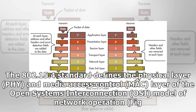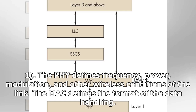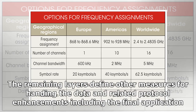All of these special versions use the same base radio technology and protocol as defined in 802.15.4a/b. The 802.15.4 standard defines the physical layer (PHY) and media access control (MAC) layer of the Open Systems Interconnection (OSI) model of network operation. The PHY defines frequency, power, modulation, and other wireless conditions of the link. The MAC defines the format of the data handling.